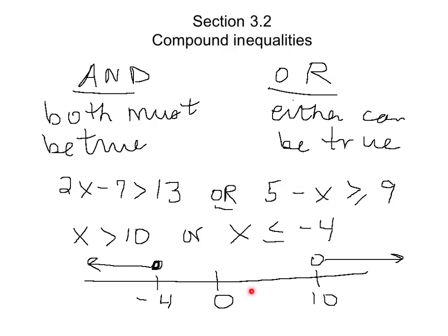But say over here, 2 would not. 2 would not be either one of those. In other words, 2 does not make this true, and 2 does not make that true.